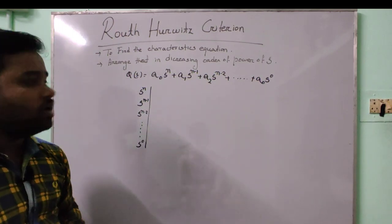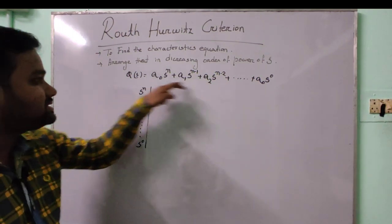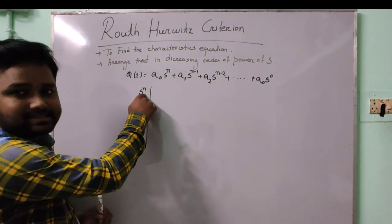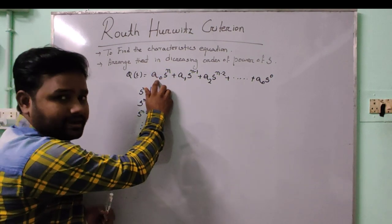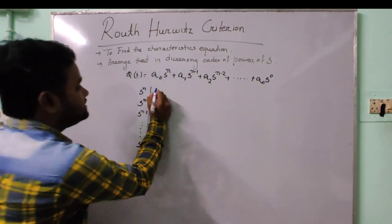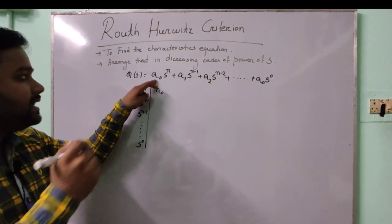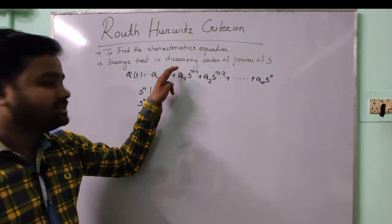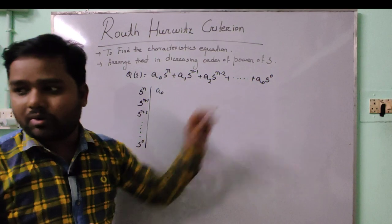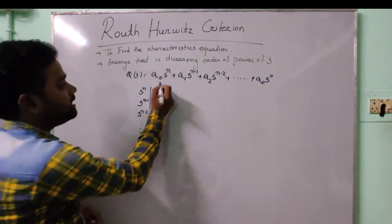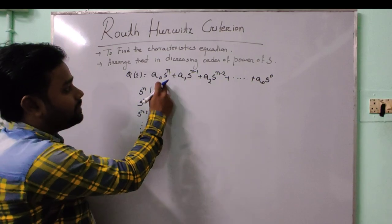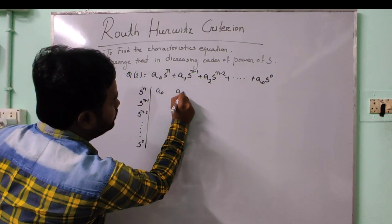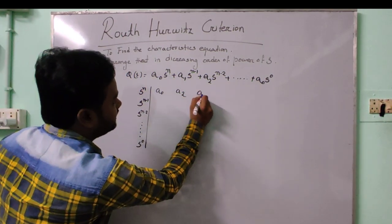In this tabular method, we have to fill the first two rows using the characteristic equation. In the first row, if the maximum power is n, we write the coefficient a₀ for sⁿ. If n is odd, all odd-powered coefficients go in the first row; if n is even, all even-powered coefficients go in the first row. So we write a₀, then skip one and write a₂, then a₄, and so on.